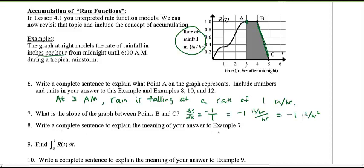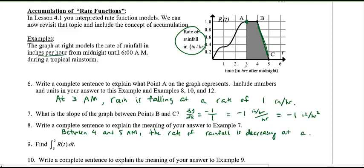Between 4 and 5 a.m. (between points B and C), the rate of rainfall is decreasing at a rate of 1 inch per hour per hour (or per hour squared). The slope is negative, which tells us the rate is decreasing. Units matter — make sure to state them correctly in your complete sentence.